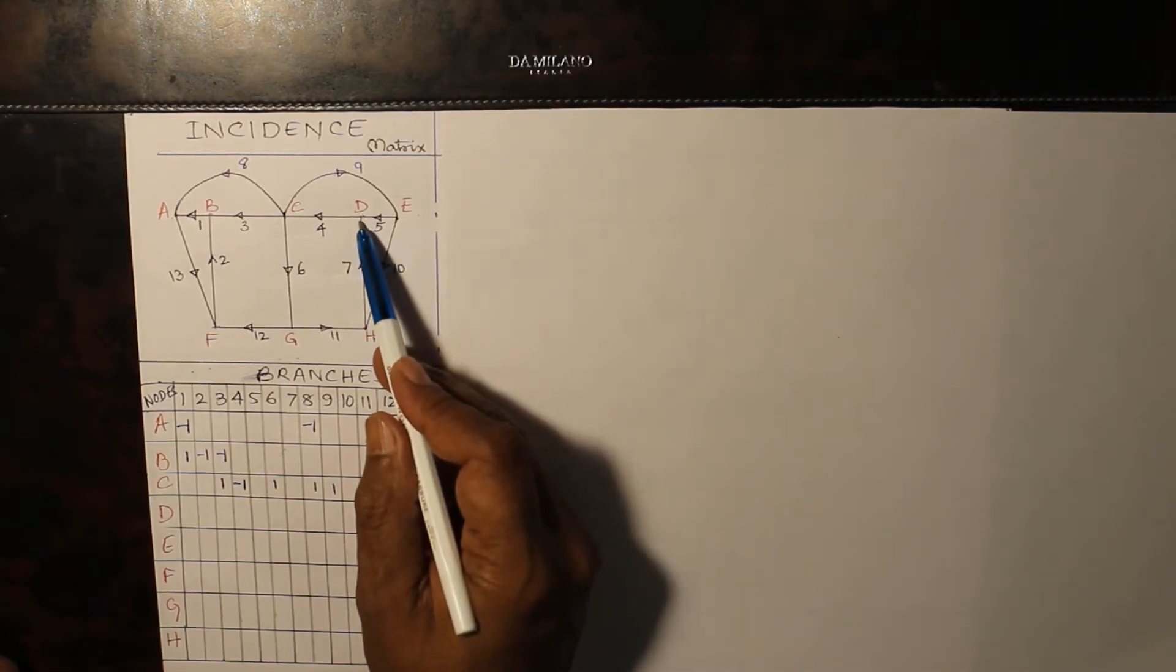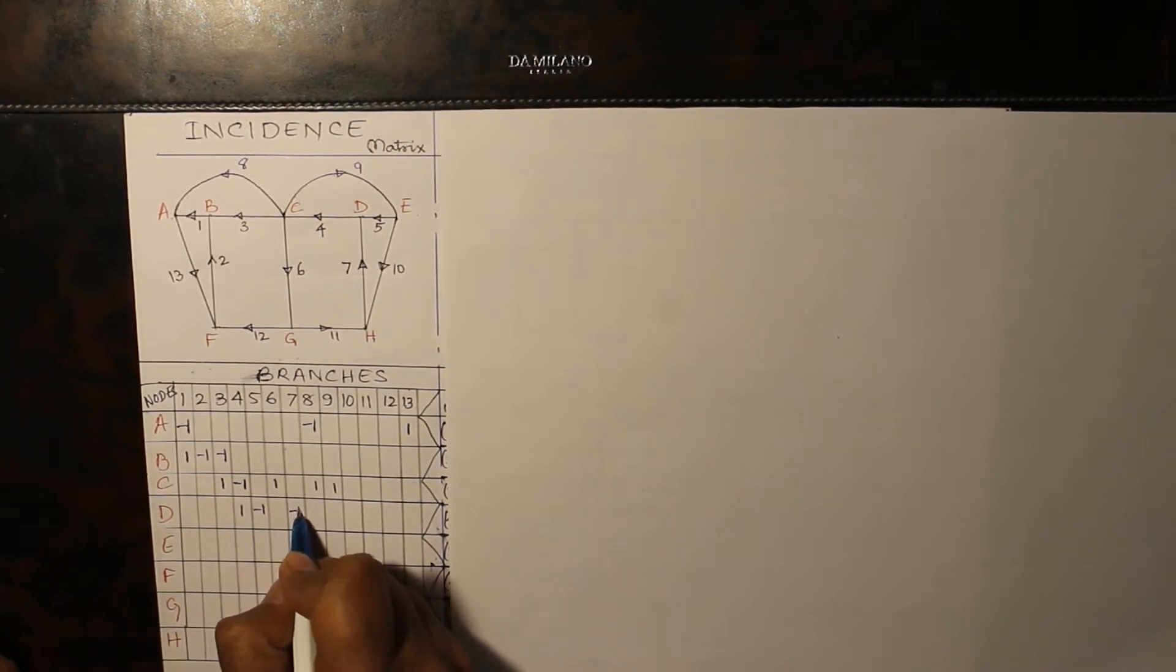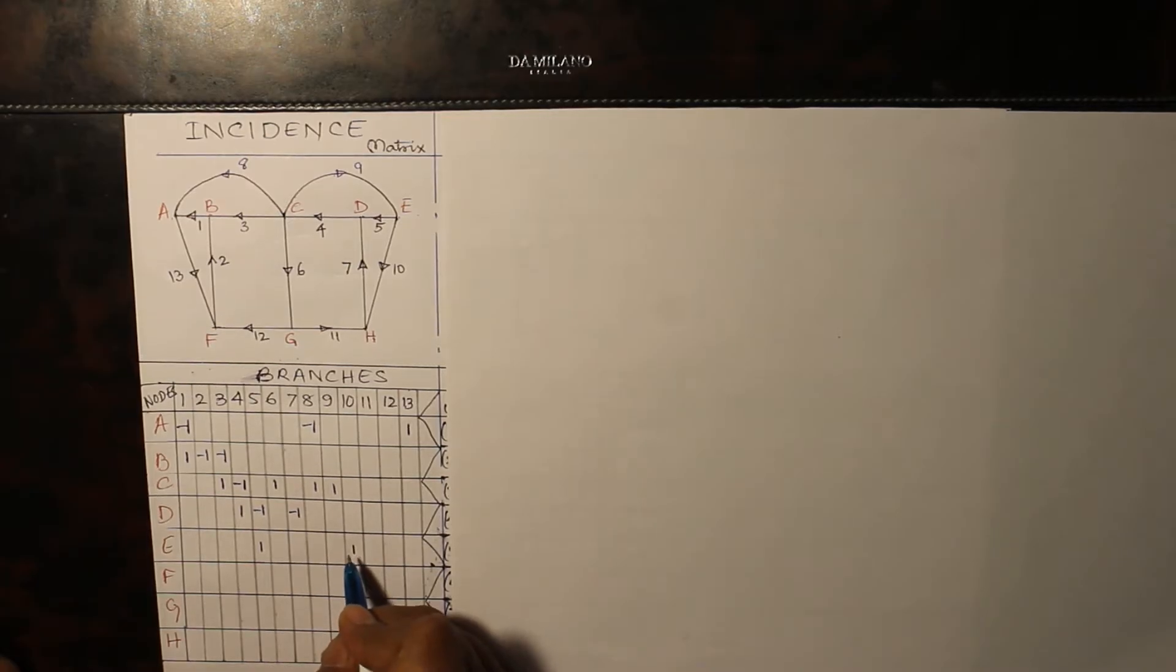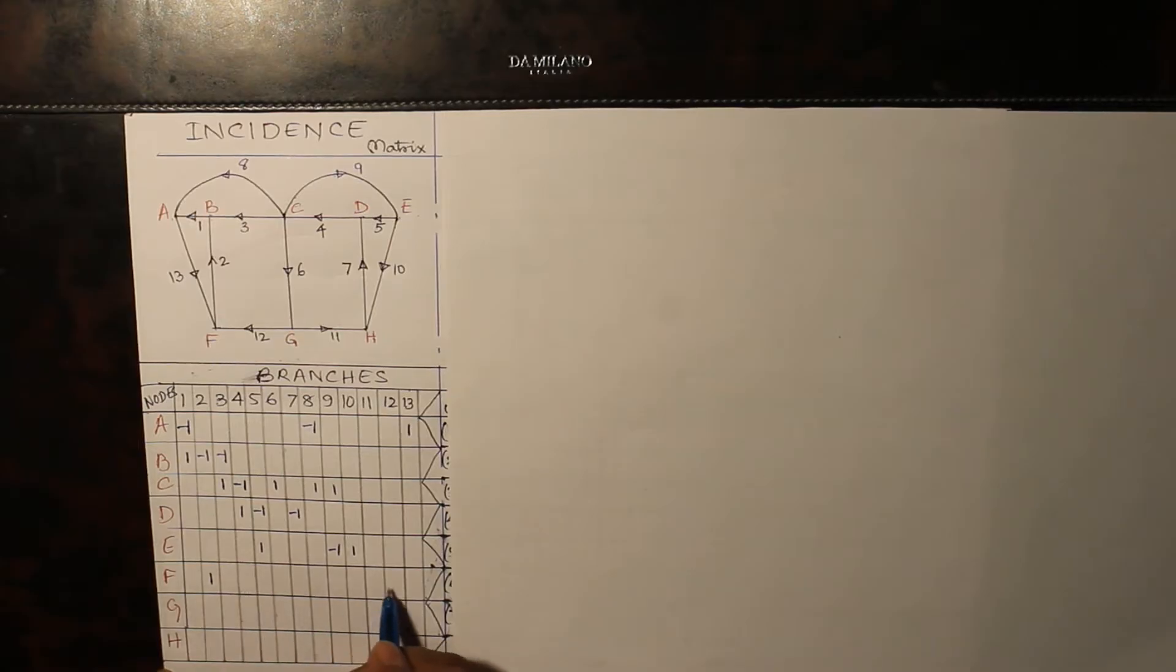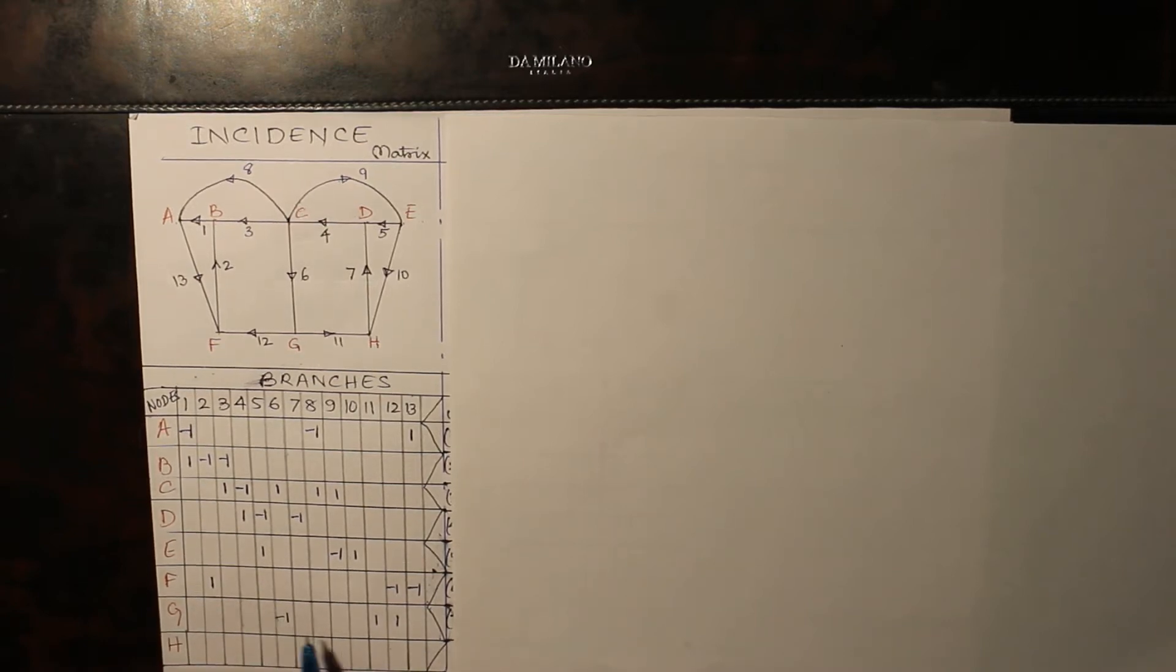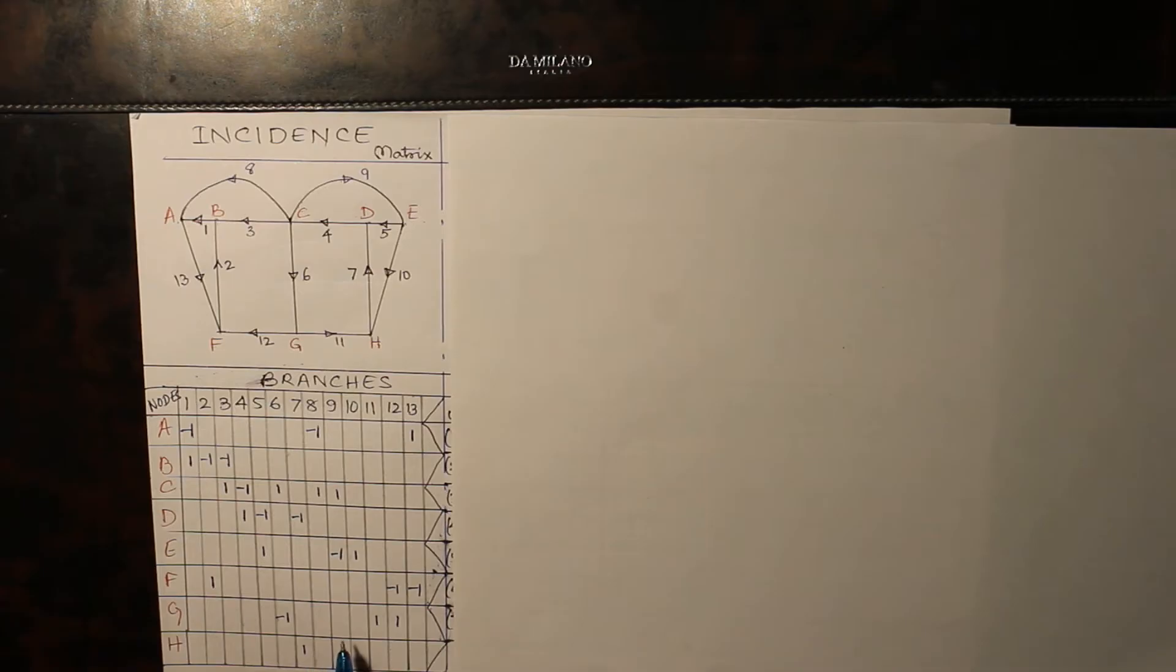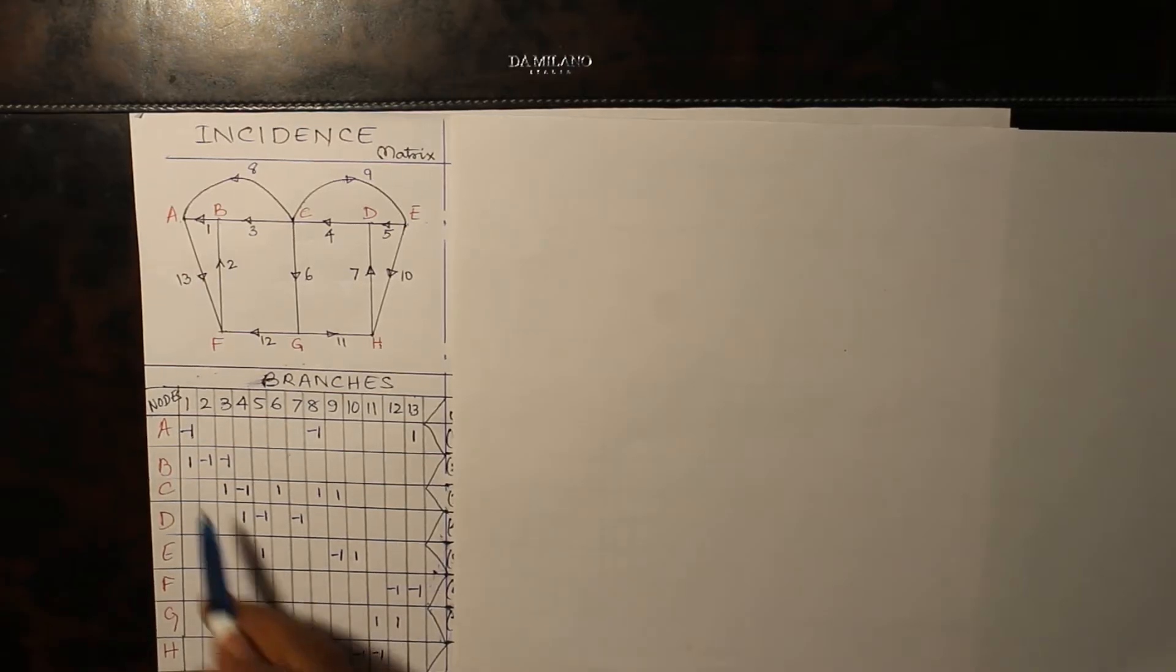For D, going away, 4, coming, 5 and 7. For E, going away, 5 and 10, coming, 9. For F, going away, 2, coming, 12 and 13. For G, going away, 11 and 12. For G, coming, 6 and for H, going away, 7, coming, 10 and 11. Rest all of them are 0s.